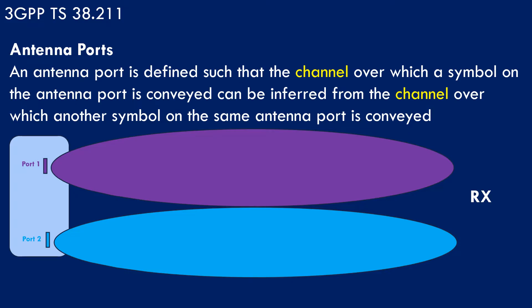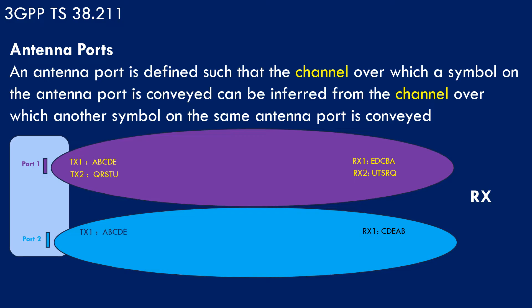A signal is transmitted via port 1 (TX1). Assume the transmitted signal is A B C D E in sequence and the receiver receives E D C B A. A second signal Q R S T U is transmitted, and the received signal at RX will be U T S R Q. So the channel has treated both signals in the same manner when transmitted from the same port.